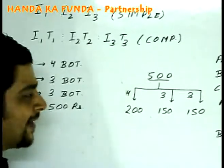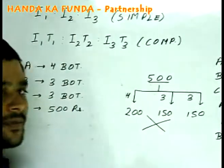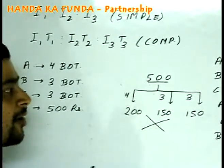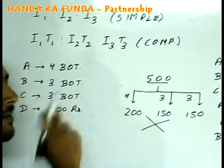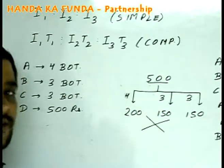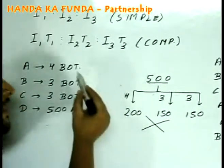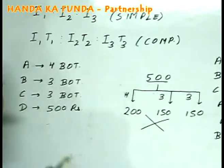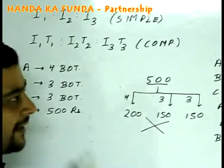But is that correct? No, it is not. Why? Because we also need to account for the fact that A, B, and C are also drinking beer themselves. Did they actually invest 4 bottles, 3 bottles, and 3 bottles? No, they did not.